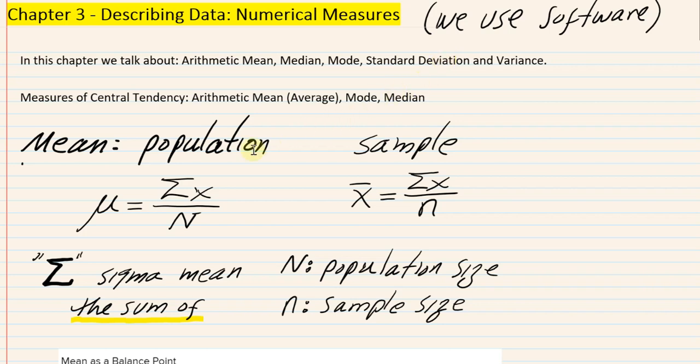Our measures of central tendency — the idea is that suppose I have a collection of quantitative data and I would like to find perhaps what is the most common value, what is the center of this data — like the center of gravity, the centroid. What is the most typical score I could expect? I'm going to give you the formula for one of them — the first formula of our course.